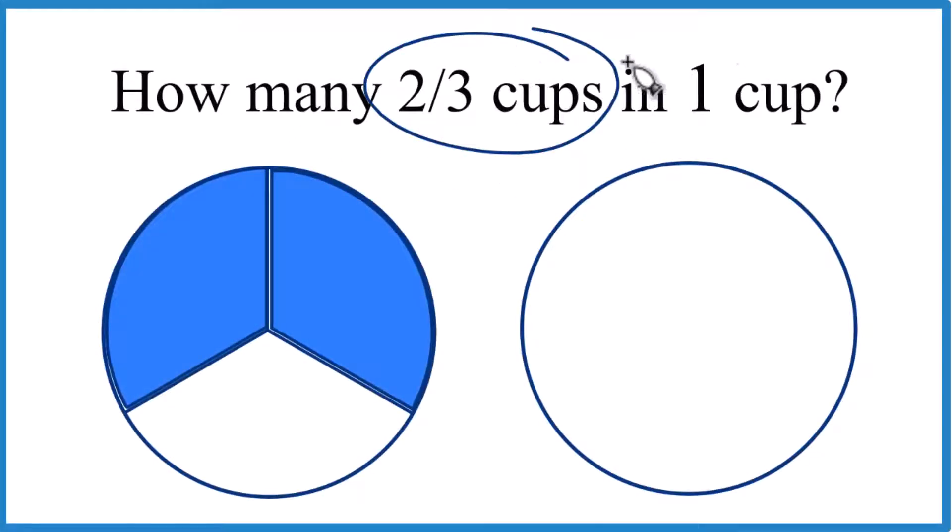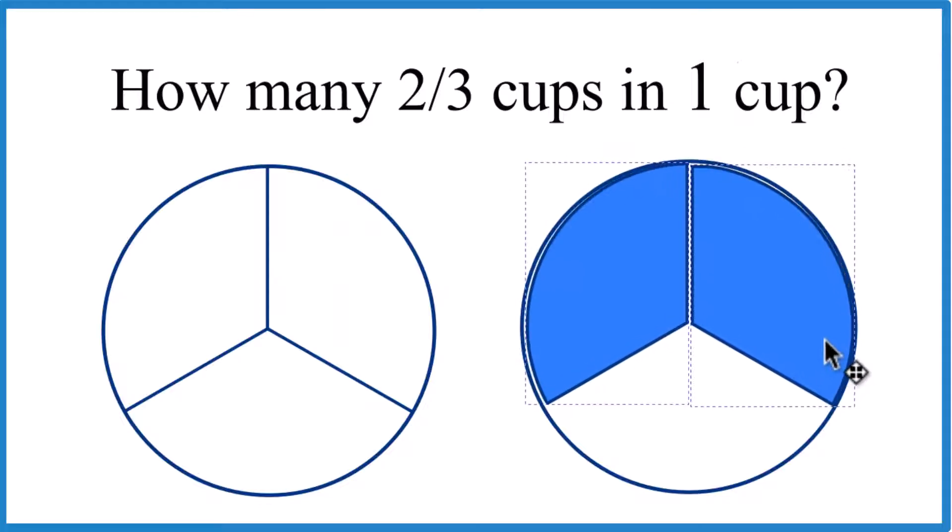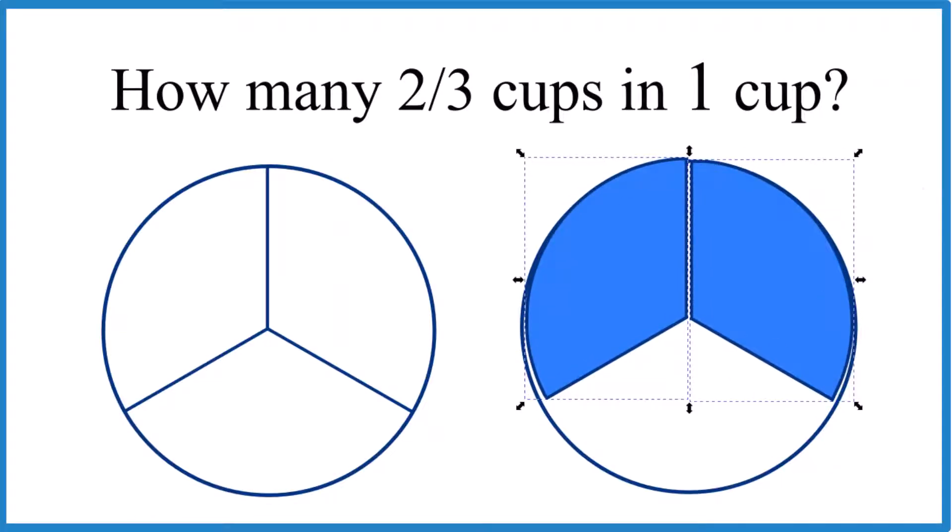Let's see how many two-thirds cups go into one cup. So here we have our two parts out of three and here's our whole cup. And we can see that at least one is gonna fit in there, but not two. So between one and two, that's what our answer should be.